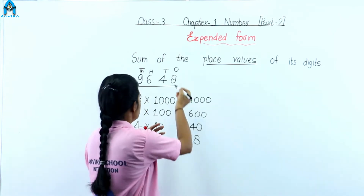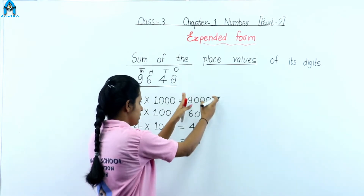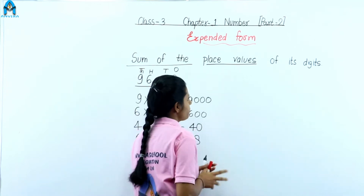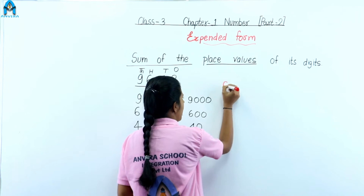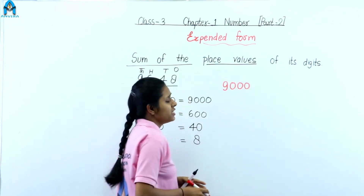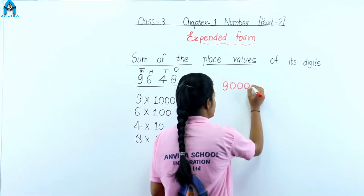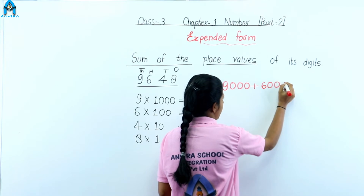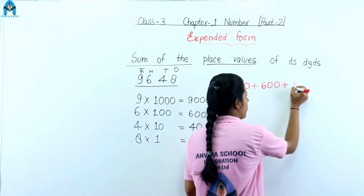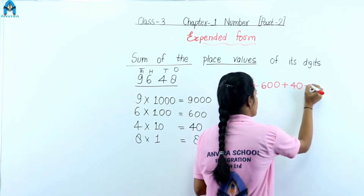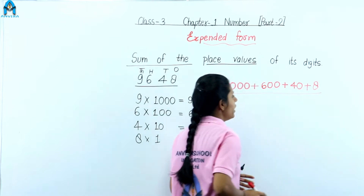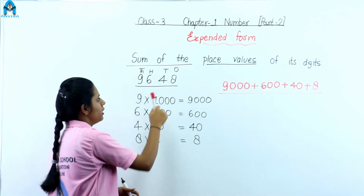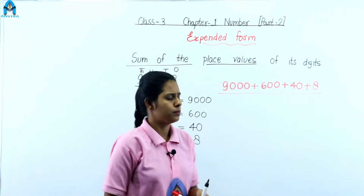Now, what is expanded form? It is the sum of the place values. So we find the sum of place values: nine thousand plus six hundred plus forty plus eight. This is called expanded form. This is the expanded form for the number nine thousand six hundred forty-eight.